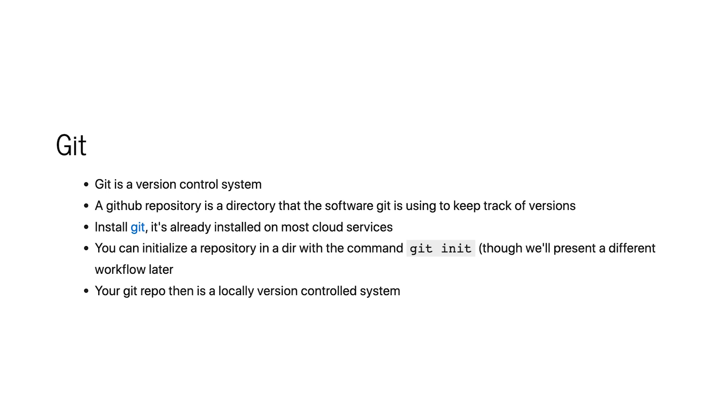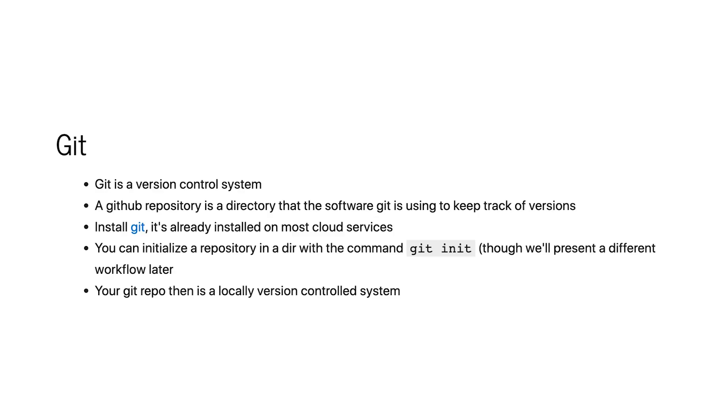You can initialize a repository with git init. Your files in that directory are then part of your Git repository. We'll make sure we understand how we add things and how we keep track of — make sure certain things are being tracked and others are being ignored. Once you've done this, your Git repo, which is just this directory, is a locally version-controlled system.